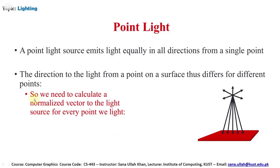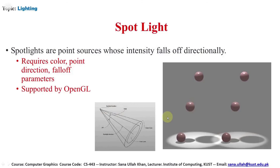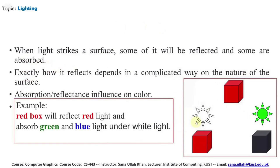A point light source emits light equally in all directions from a single point. The direction to the light from a surface point differs for different points, so we need to calculate a normalized vector to the light source for every point. Spotlights are point sources whose intensity falls off directionally. Spotlight properties — color, point, direction, falloff parameter — are supported by OpenGL.